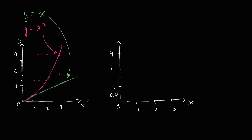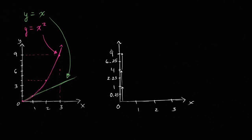Instead of 1.5, I say this is 1.5 squared, or 2.25. So each incremental hash mark I'm not increasing by the same amount. When I go from the bottom to the first mark, I'm increasing by one. From there to the next, I'm increasing by three. From there to the next, I'm increasing by five. So each hash mark I'm increasing by more and more. This y-axis is no longer linear — it's quadratic, growing as a power of two. Each hash mark represents the square of its position, instead of just counting the hashes.